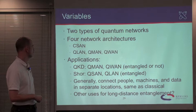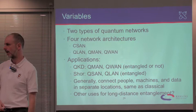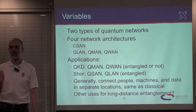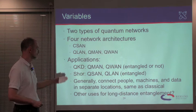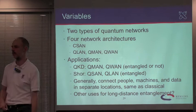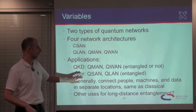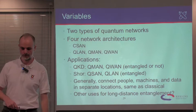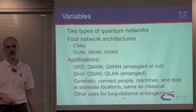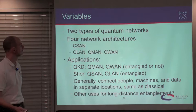For quantum key distribution, there's little need to do that inside a laboratory environment, so we're looking primarily at metropolitan area networks and wide area networks. QKD can be done using either unentangled or entangled networks. For other applications including Shor, we need entangled networks. The goal generally for networks is to connect people, machines, and data that are in separate locations — the same as in classical networking. It's also possible that there are other uses for long-distance entanglement, including specific physics experiments.